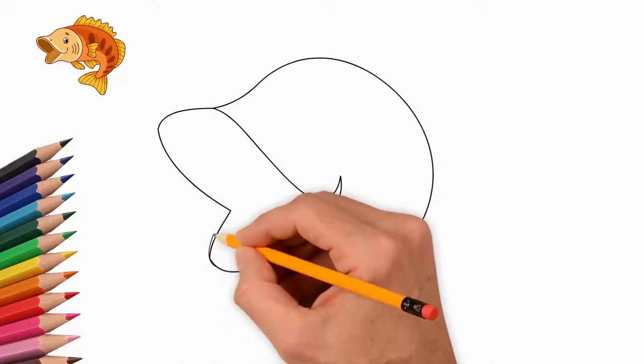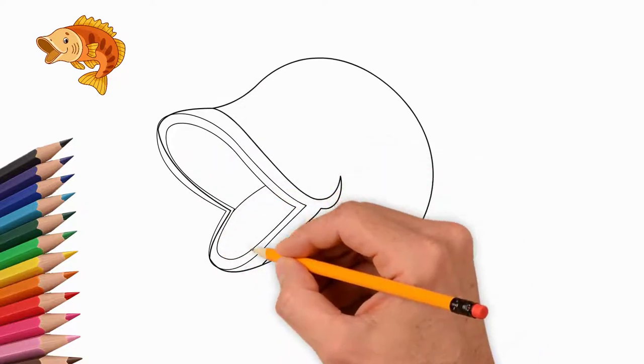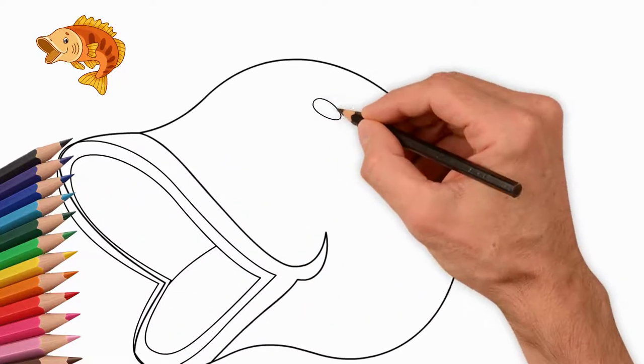First, draw part of the fish's head. Our fish has an open mouth. Draw an open mouth and draw lips.